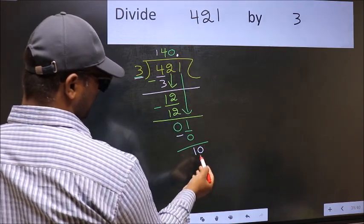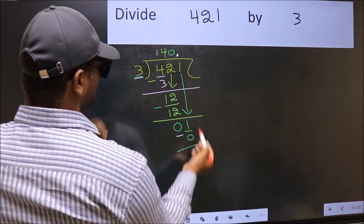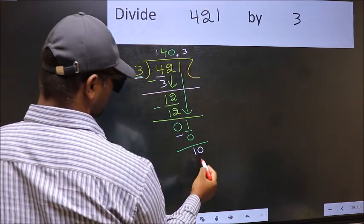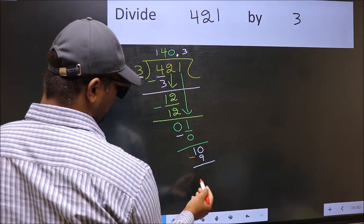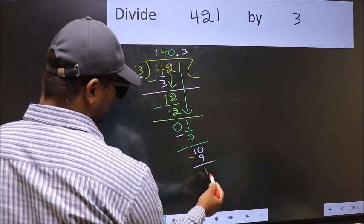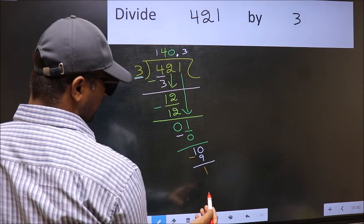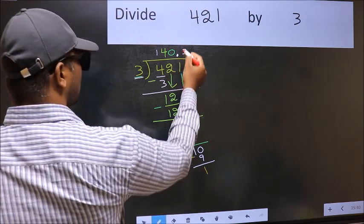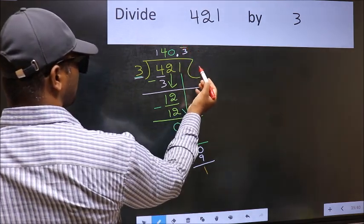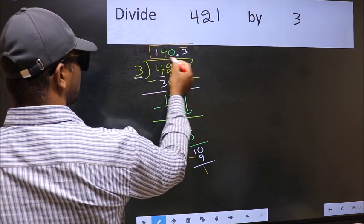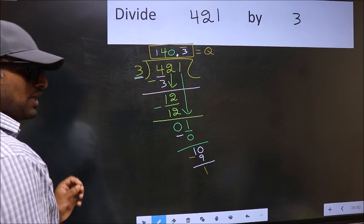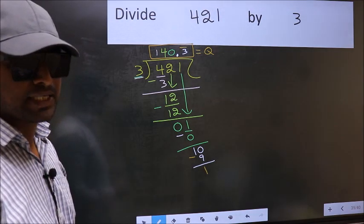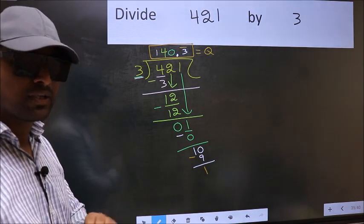So, 10. A number close to 10 in 3 table is 3 3's, 9. Now you subtract. 10 minus 9, 1. We got 1 again. That means we get a bar on this number. So this is our quotient. Did you understand where the mistake happens? You should not do that mistake.